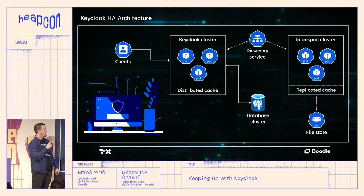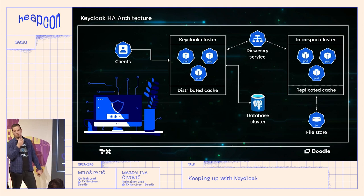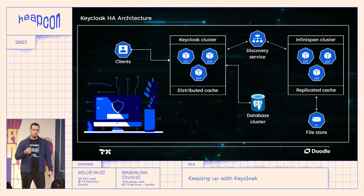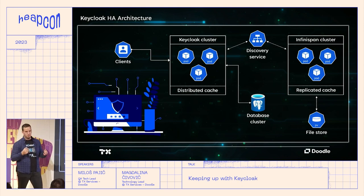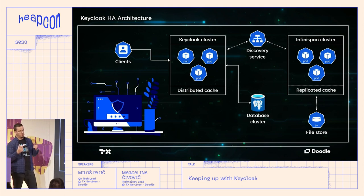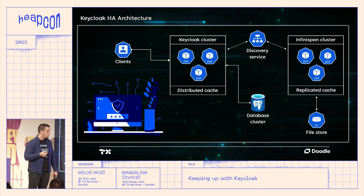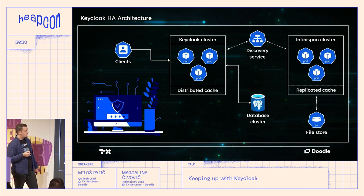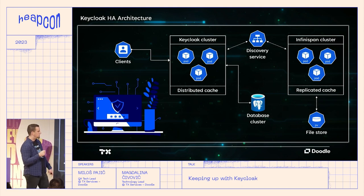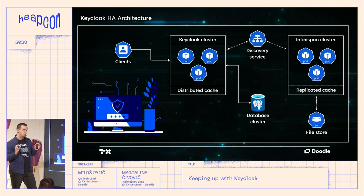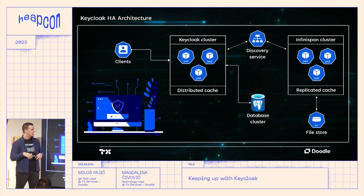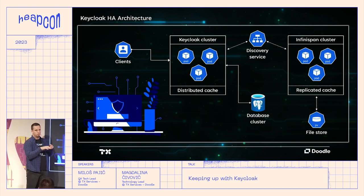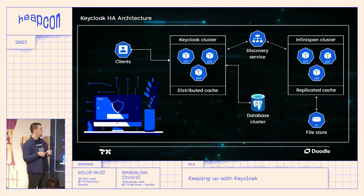Within the Keycloak cluster, we use embedded Infinispan to communicate to the remote Infinispan cluster using the Hot Rod protocol and a discovery service. This is important because these two clusters need to be up to date on each other's topology to communicate properly. Keycloak uses Postgres as its main database. On the Keycloak cluster side, we use a distributed cache, where cache entries are evenly distributed across all pods in the cluster, which is great for scalability since you can horizontally scale the number of cache entries.